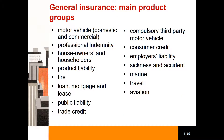These are various types of products and services in the general insurance industry. For example: motor vehicle, professional indemnity, house owners and households, product liability, fire, mortgage markets, public liability, trade credit, compulsory third-party motor vehicle, consumer credit, employers liability, sickness and accident, and marine, travel, and aviation.